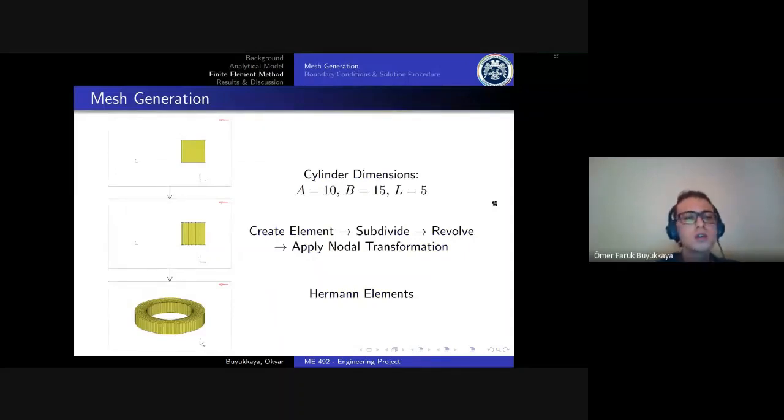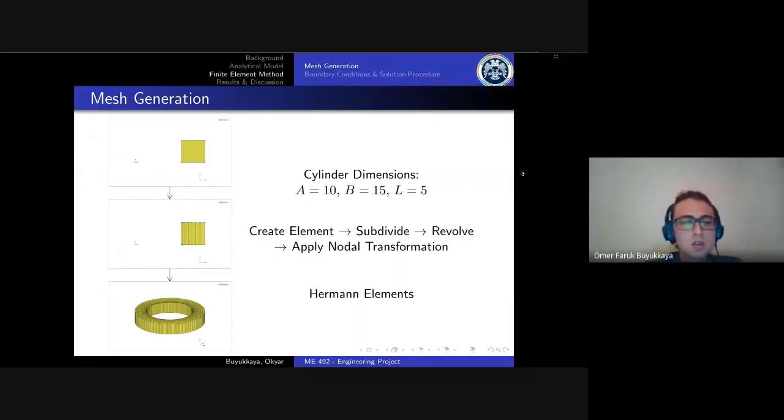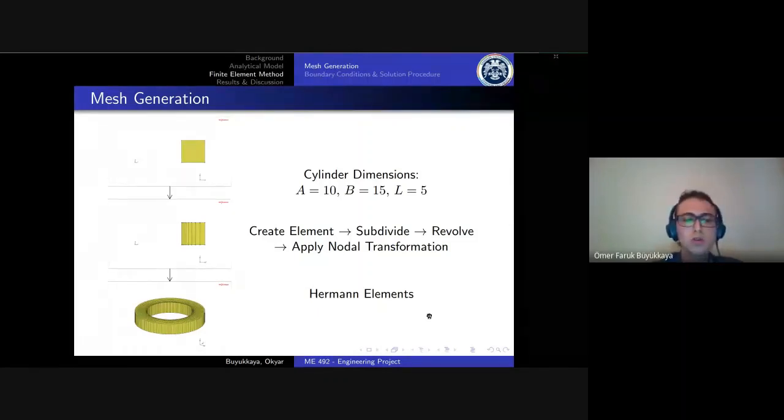You can see the mesh generation process. We apply nodal transformation after creating the model for better handling with the model to apply boundary conditions, etc. This also reduces the analysis time because we applied transformation before, not during the analysis. We use Hermann elements to prevent locking issues with the use of classical elements. Hermann elements consist of plus one node for hydrostatic pressure.